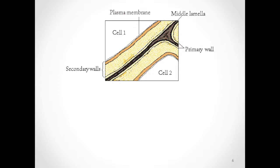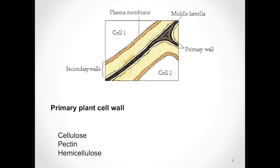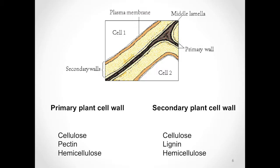Polymers that we can see in the primary plant cell wall would be cellulose, pectin, and hemicellulose. Those that you can see in the secondary plant cell wall are cellulose, lignin, and hemicellulose. Looking at the stereotypical drawing here, it makes sense that we can find our brown rot fungi in the secondary plant cell wall, which is much thicker than the other layers, and it has cellulose and hemicellulose in it, which are the components that brown rot fungi will target during metabolism.